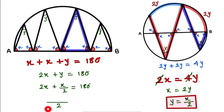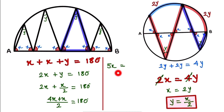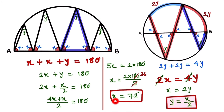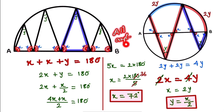Substituting y equals x over 2, we get 2x plus x over 2 equals 180. Taking LCM of 2: 4x plus x equals 360, so 5x equals 360, and x equals 72 degrees. Since we let the red angle equal x, the value of the red angle is 72 degrees. Thank you for watching — if you liked the video, please subscribe to the channel and share it with your friends.